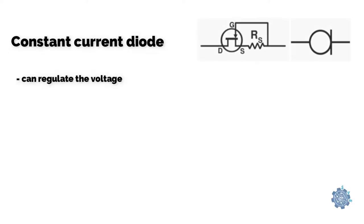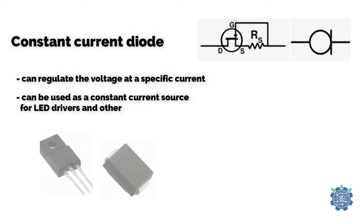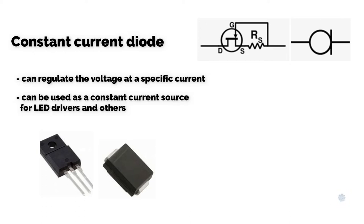Constant current diodes can regulate the voltage at a specific current. They can be used as a constant current source for LED drivers and other applications.